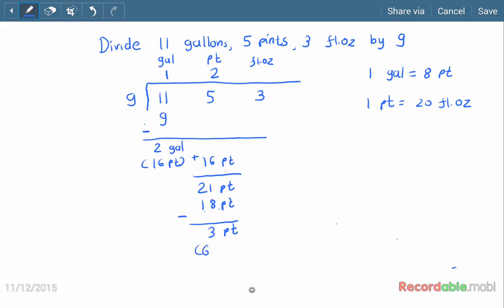We will transfer over here 60 fluidounces. So the upper there is 3 fluidounces, so 3 plus 60 is equal to 63 fluidounces. So 9 into 7 will give us 63 fluidounces. The remainder is now 0. So this is our answer: 1 gallon, 2 pints, and 7 fluidounces is our answer by dividing this value with 9.